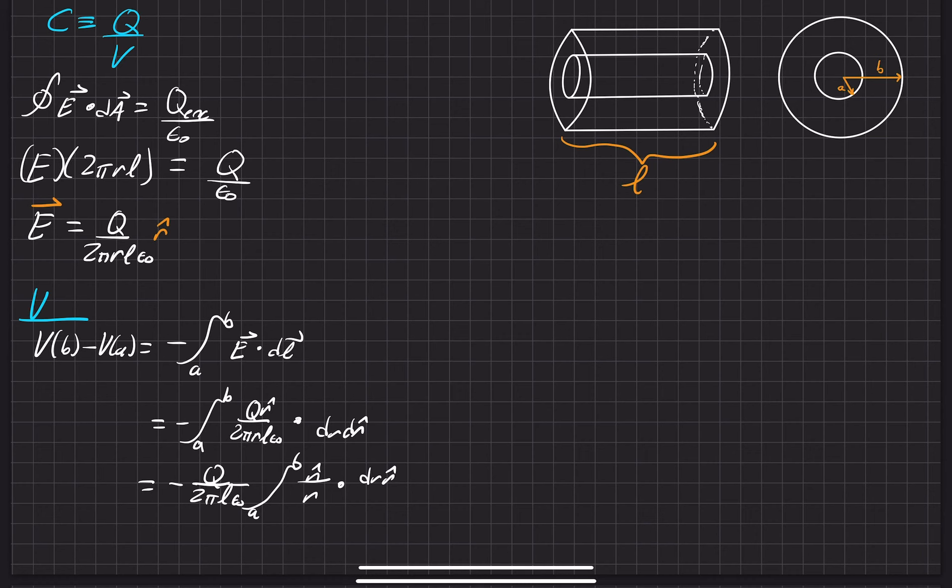The integral of 1 over r is just natural log of r. So now we have Q over 2πL epsilon naught, natural log of r evaluated from B to A. We can redo that as negative Q over 2πL epsilon naught natural log of B divided by A.